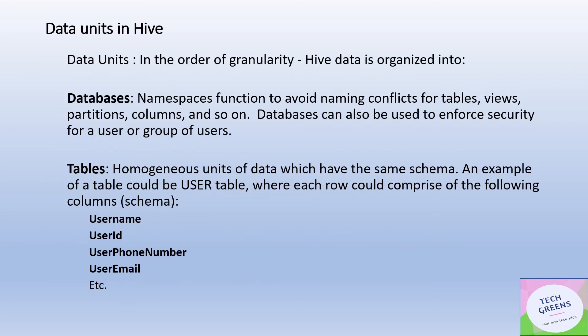Let's look at the different data units in Hive. In order of granularity, Hive data is organized into four categories. The first is the database, which is essentially a namespace. You can create different namespaces and keep your tables and data inside them to avoid naming conflicts — similar to how different schemas work in a regular RDBMS, where you can have tables with the same name in different schemas.